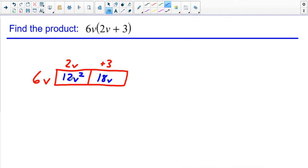And then from here, I would just combine any like terms that I can see. But here there are none. So this would just be my answer, 12V squared plus 18V. That would be my answer here. This one, probably easier just to distribute on this one. But I still wanted to show you the box method.